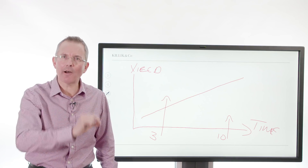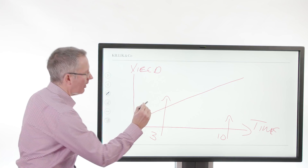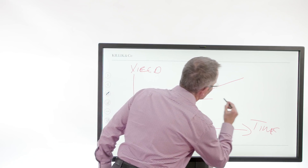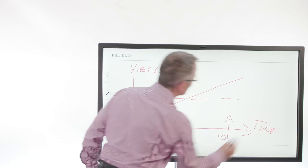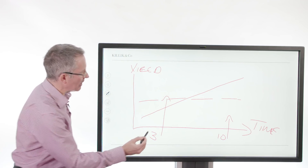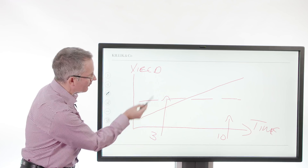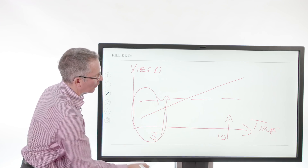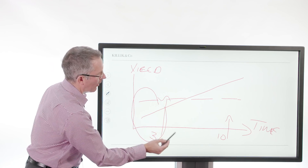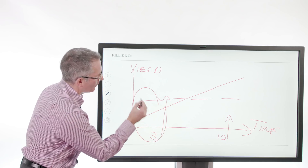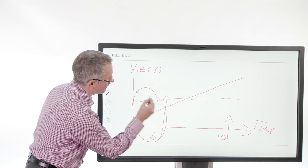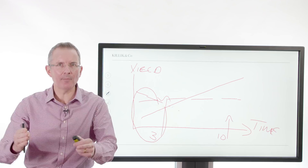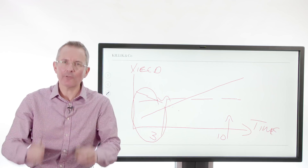What started to happen is this: the yield curve started to flatten. Some people have said watch out, because down the short end — anything out to about five years — we've even seen a little bit of inversion, with the term premium narrowing and evaporating.